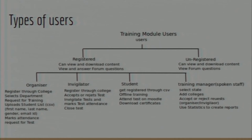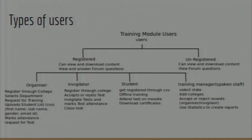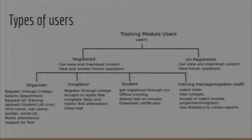The next role is the invigilator — the person who supervises the test. The invigilator also registers through a college. When the organizer requests a test, they select an invigilator, and that request appears on the invigilator's interface. The invigilator can accept or reject the test request, then invigilates the test and marks test attendance. For example, if 20 out of 50 trained students show up for the test, the invigilator marks those 20 — only they will receive certificates. The invigilator also closes the online test once everything is completed.